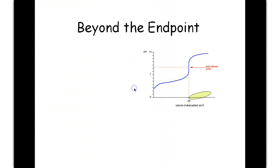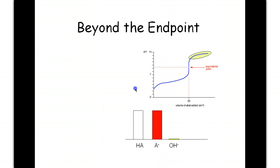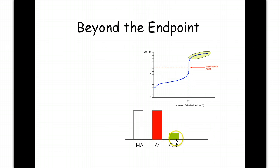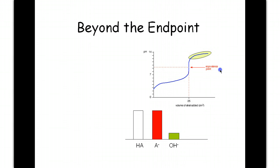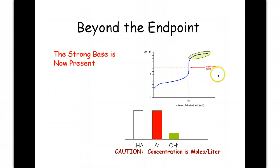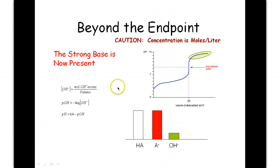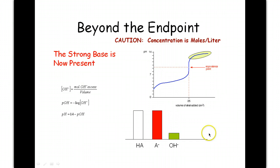Beyond the equivalence point, we no longer have our buffer. We've run out of weak acid and conjugate base, so as you add more sodium hydroxide, that hydroxide sits around and increases the pH of your system — that's why the pH jumps sharply after the equivalence point. Make sure you go through the equations and understand them.